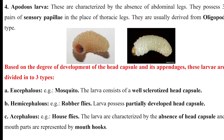Coming to the apodous larvae — 'a' means absent, 'podous' means legs. So in this type of larvae, legs are completely absent. Abdominal legs are not present, and in place of thoracic legs they have sensory papillae, through which they can sense the environment. They are usually derived from the oligopod type.